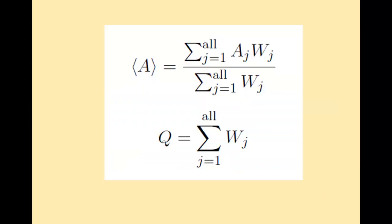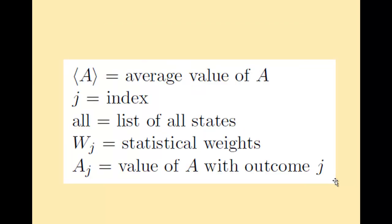And now we're ready to look at the general formula for the average of a variable A. Here J, the index, labels the possible outcomes, which side of the die comes up. The sum is over all possible outcomes. W sub J, the statistical weight, is the importance of each outcome, each value of J. And A sub J is the value of the variable A when J comes up as the outcome. The denominator Q, the normalizing factor, is simply the sum of the statistical weight.